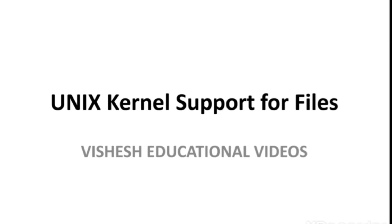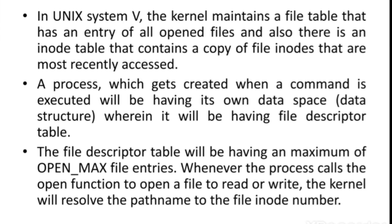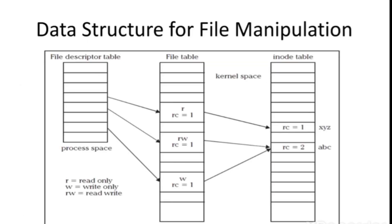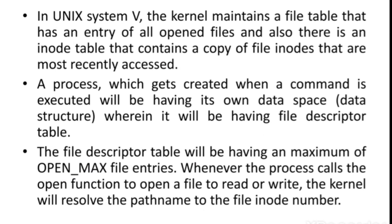Let me begin the explanation of kernel support for files — how the kernel is going to manage the file. In Unix System V, the kernel maintains three different types of tables: one is a file table, one is a file descriptor table, and one is an inode table. The file table contains an entry of all the open files.